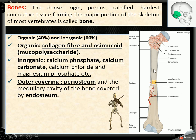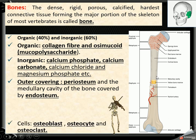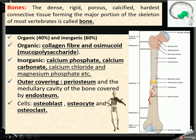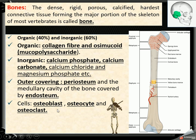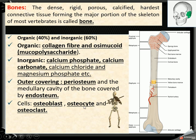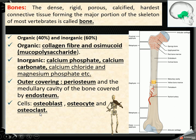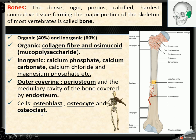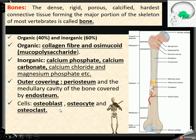The bone marrow cavity covering is called endosteum. Bones consist of three types of cells. First is osteoblast, present in immature bone. Osteocyte is present in mature bone. And osteoclast is present in aging bone. So there are three types of cells: osteoblast, osteoclast, and osteocyte.